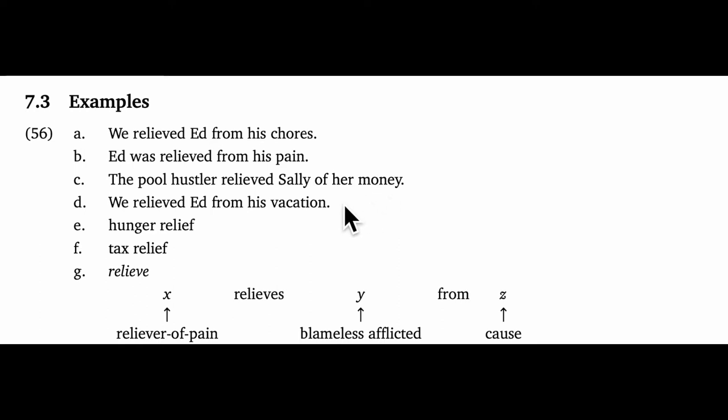Example 56d is likely to have a similar ironic flavor, assuming that Ed likes vacations. When we get to the bare phrase hunger relief, most of the required players in the frame are not represented directly. We can infer that hunger is the cause, but we don't know who the afflicted are precisely, or who's going to be the reliever.